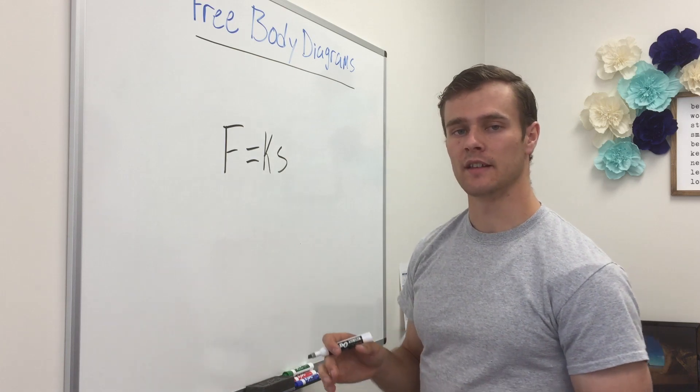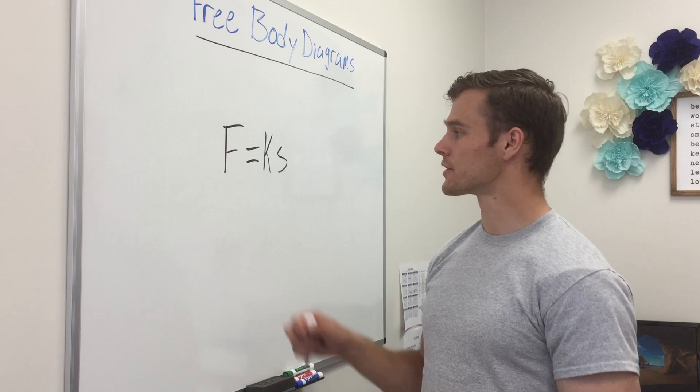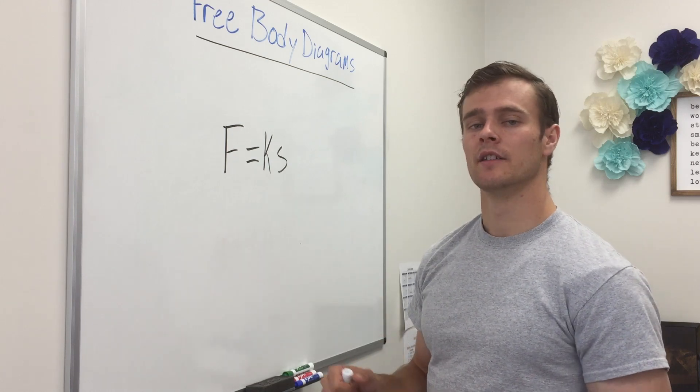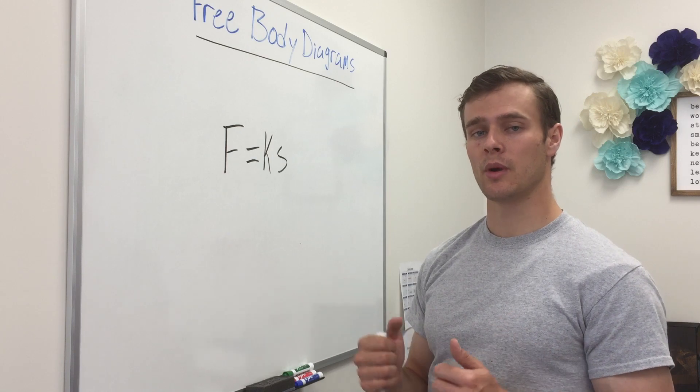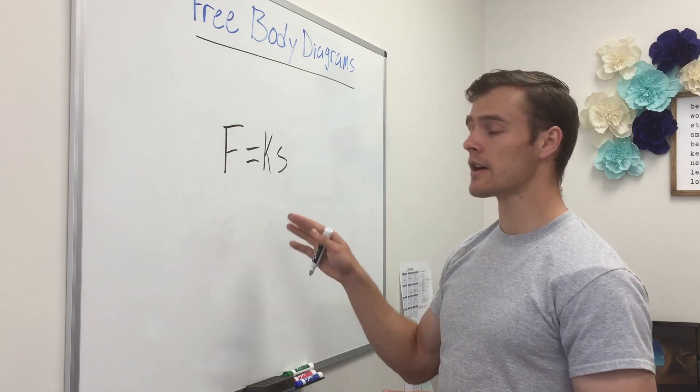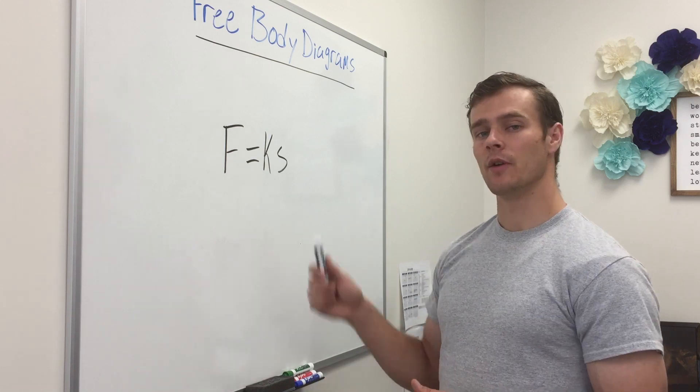So k is a property of the spring that tells us how stiff or flexible that spring is. So if we have a higher k value then that spring is going to be more stiff and it's going to be harder to compress or stretch. If it's got a lower value of k then it will be easier to stretch or compress.